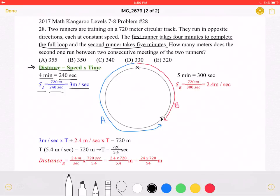Now let's do the same for runner B. 5 minutes is equal to 300 seconds, which means the speed of runner B is equal to distance of 720 meters over time of 300 seconds, which simplifies to a speed of 2.4 meters per second.